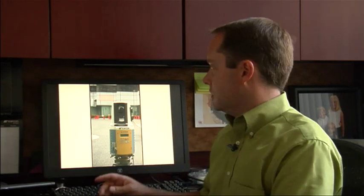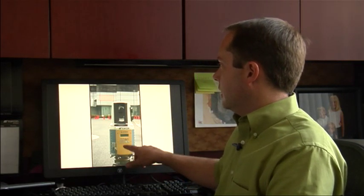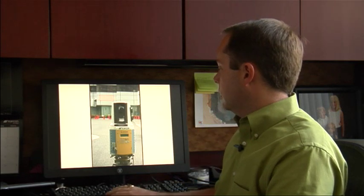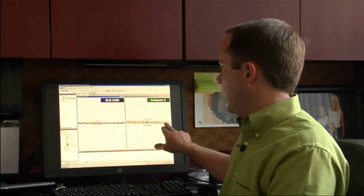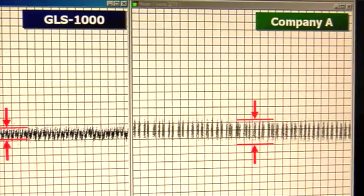So let me show you three ways you can see. First is the scanning of a flat surface, a flat wall. And when we compare our data set from the GLS-1000 to Company A, you'll see we get a much cleaner set of data.